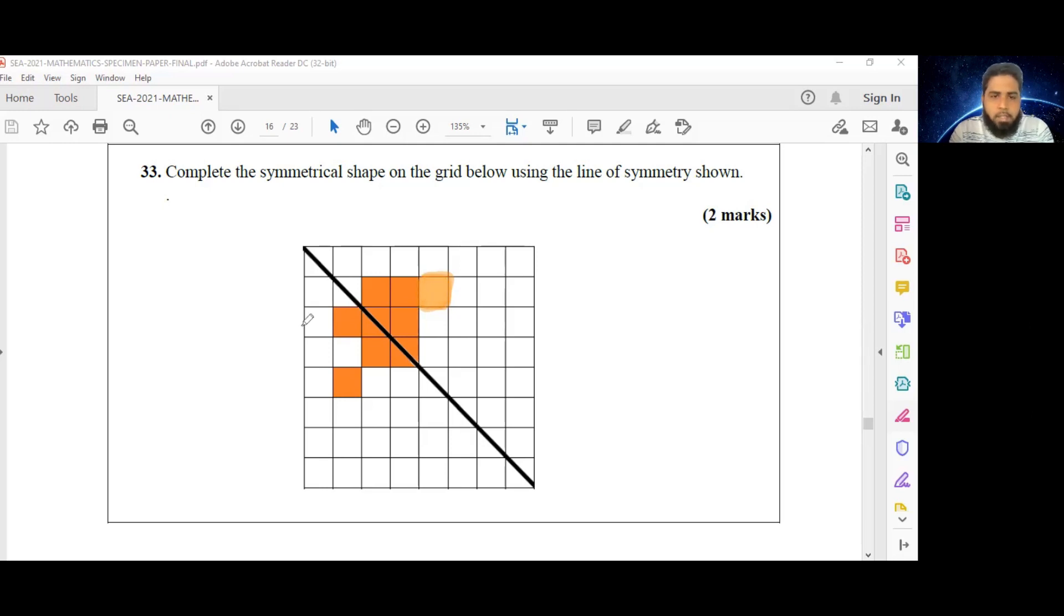And then we have also this piece that is missing as well. It's just these two blocks that we need to shade in order to complete this symmetrical figure. And there we go.